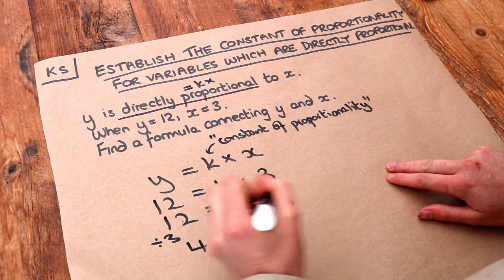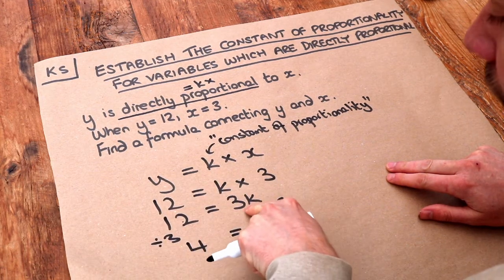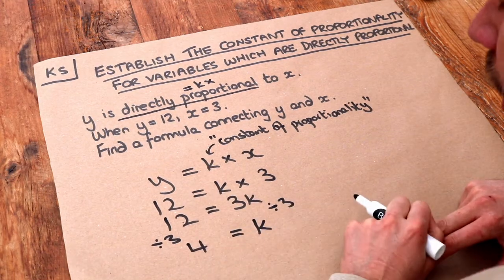3 lots of k divided by 3. The divide by 3 gets rid of that times by 3 there, and we're just left with k is 4.